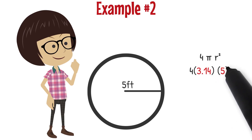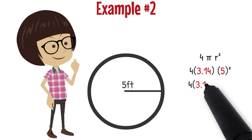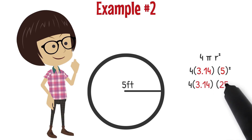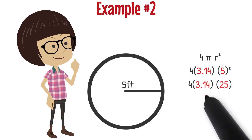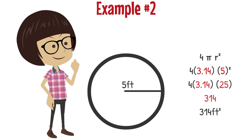Now I'm going to solve one thing at a time. The first thing we need to solve is 5 with the exponent of 2. So I'm going to rewrite the entire problem, but instead of writing 5 squared, I'm going to write 25, which is the answer of 5 squared. Next, I'm going to multiply all three of my numbers together — the 4, 3.14, and 25 — and get 314. Because this example gave us a sphere measured in feet, my final answer is 314 feet squared.